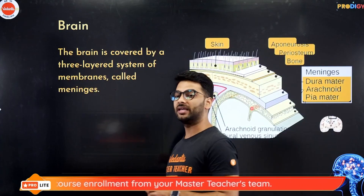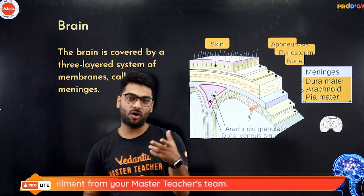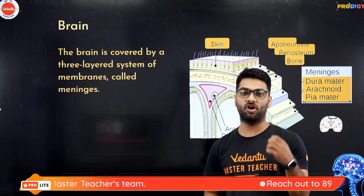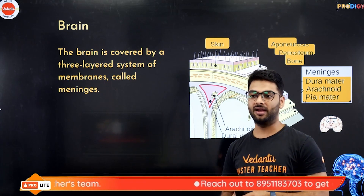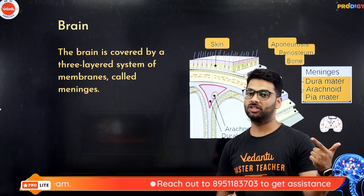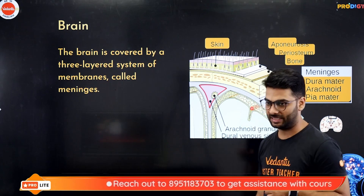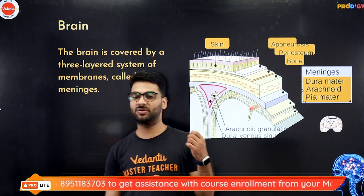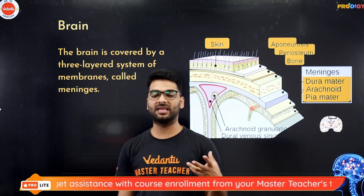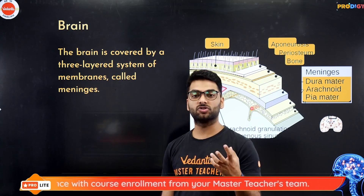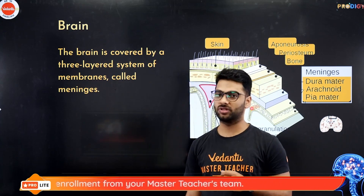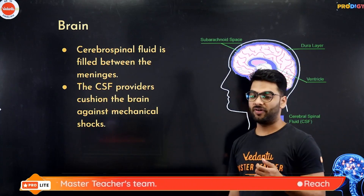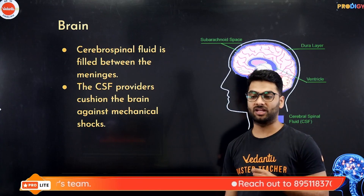The brain is protected by the cranium or brain box, also called the skull. It has three layers of membranes called the meninges: the pia mater, the dura mater, and the arachnoid mater. There is also cerebrospinal fluid present between these meninges that protects the brain from physical shock, maintains fluidity, supplies nutrients, and provides cushioning against mechanical shock.